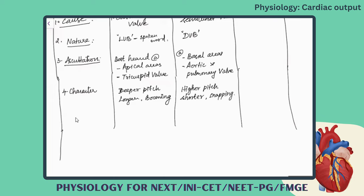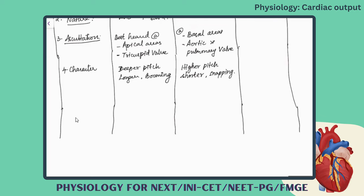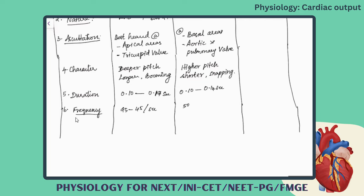The first heart sound is very deep in pitch, while the second is higher in pitch. The duration of the first heart sound is 0.10 to 0.17 seconds, and the second heart sound is 0.10 to 0.14 seconds — almost similar in duration. The frequency of the first heart sound is 25 to 45 per second, and the second heart sound is 50 per second.